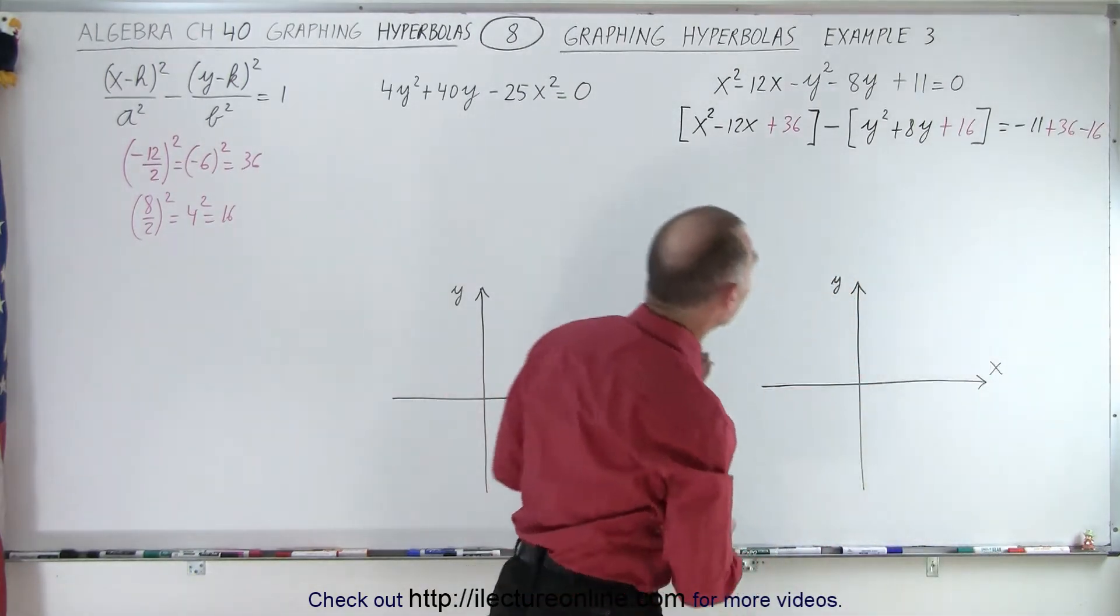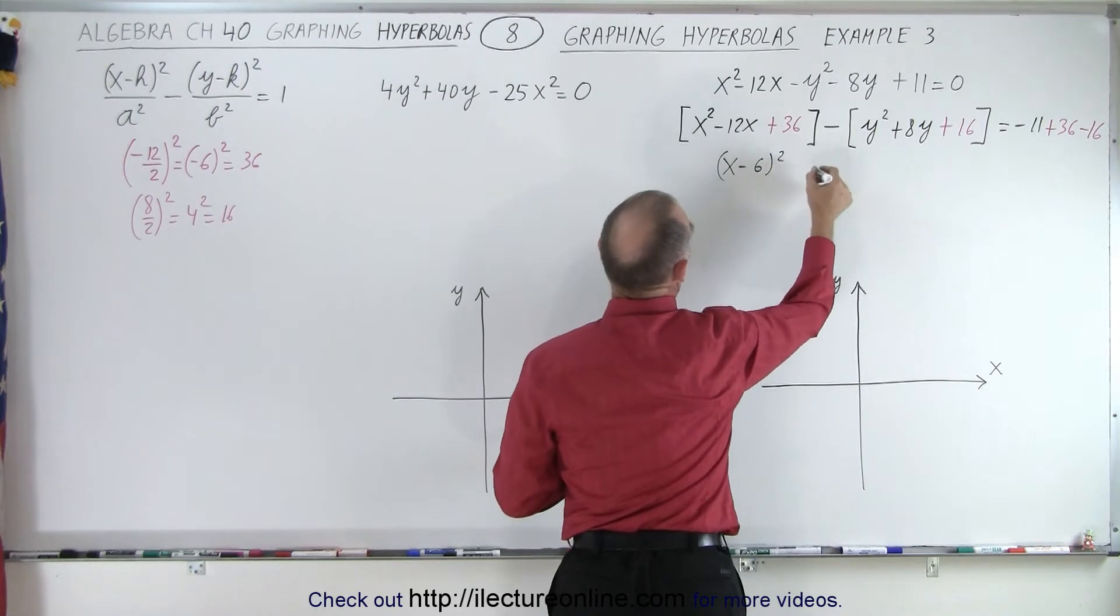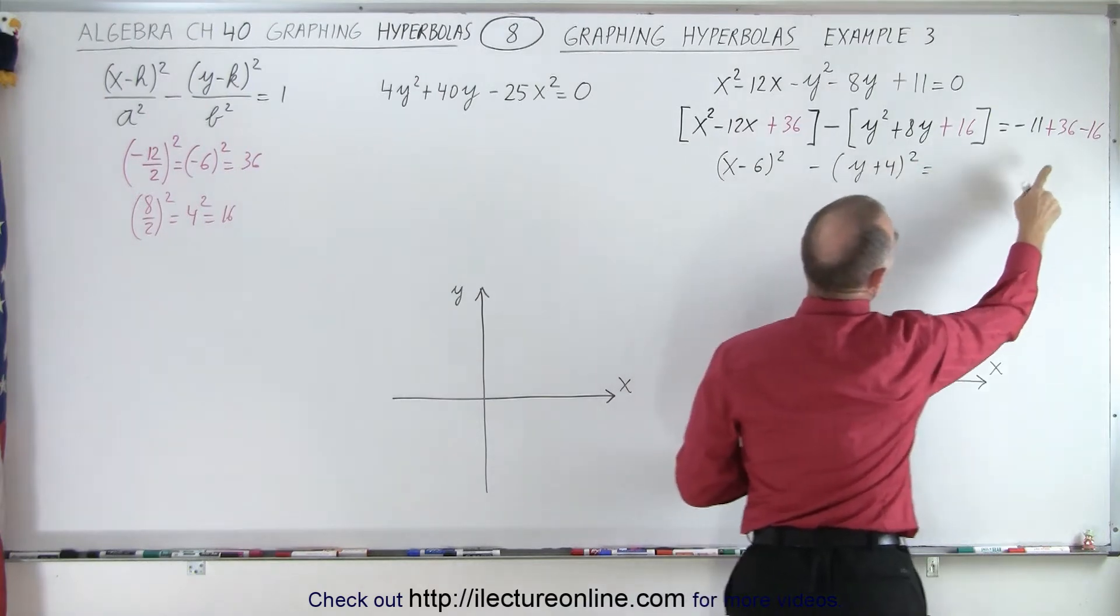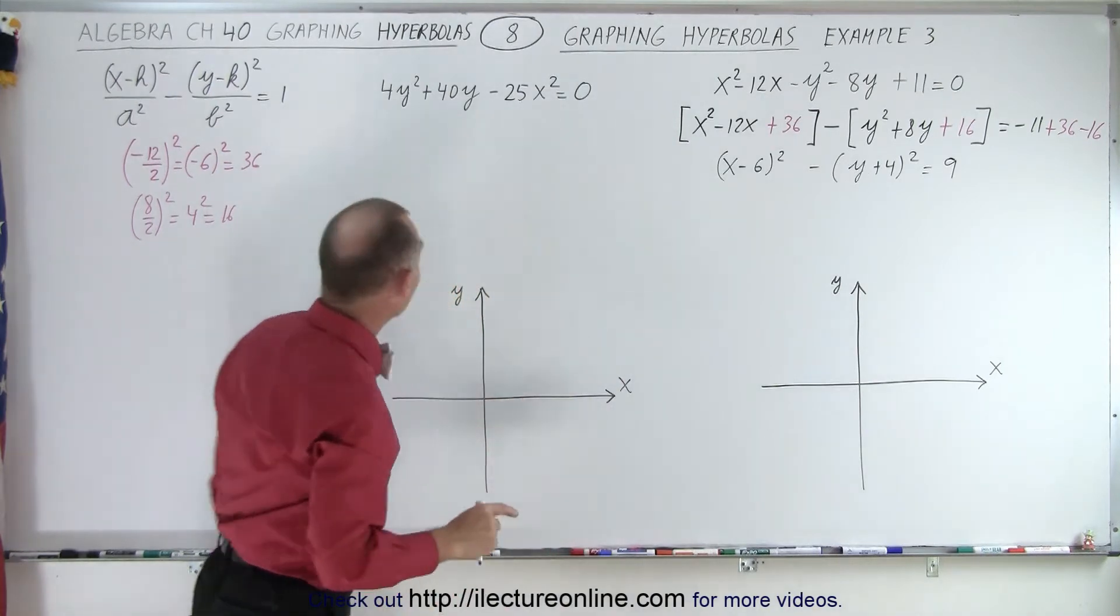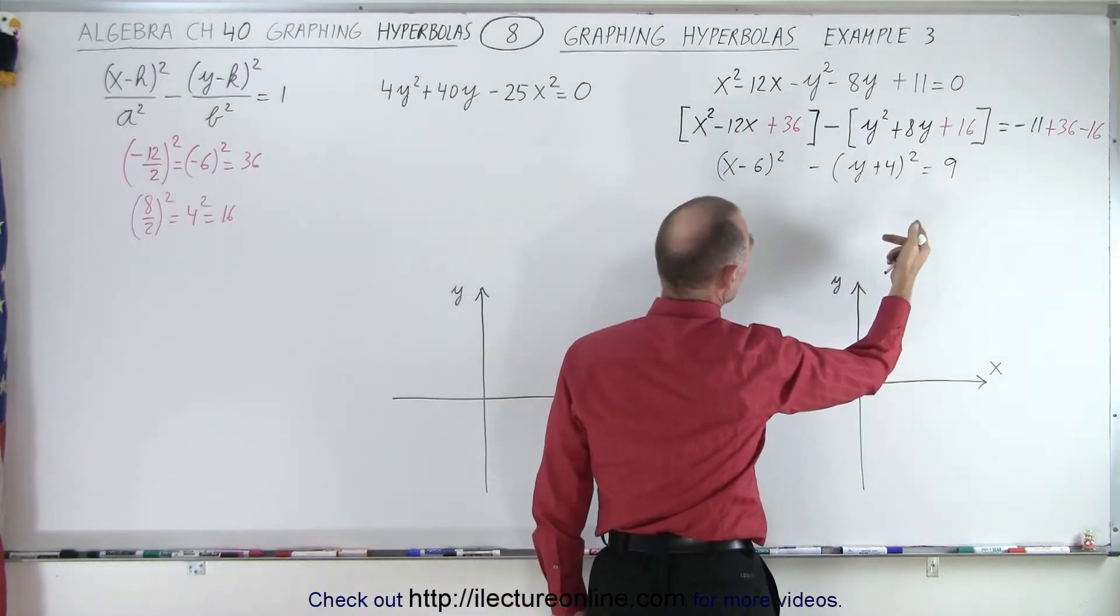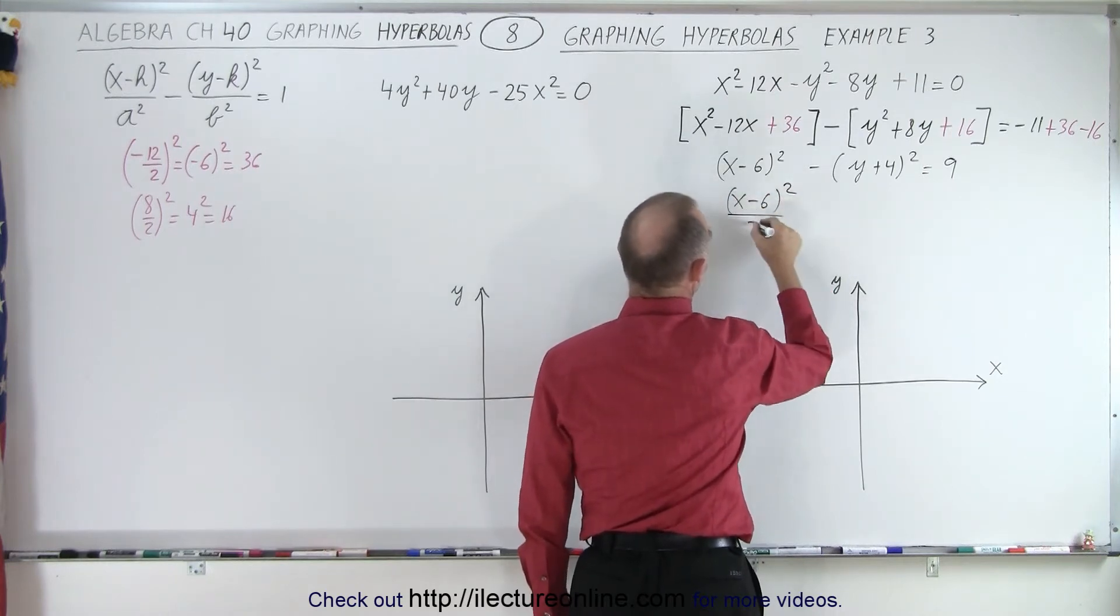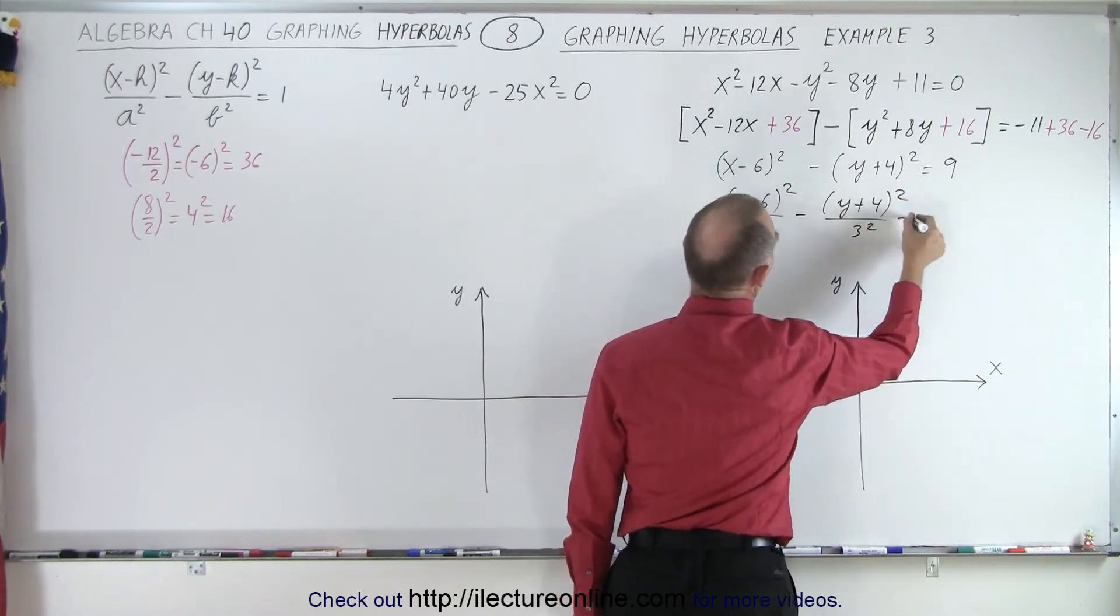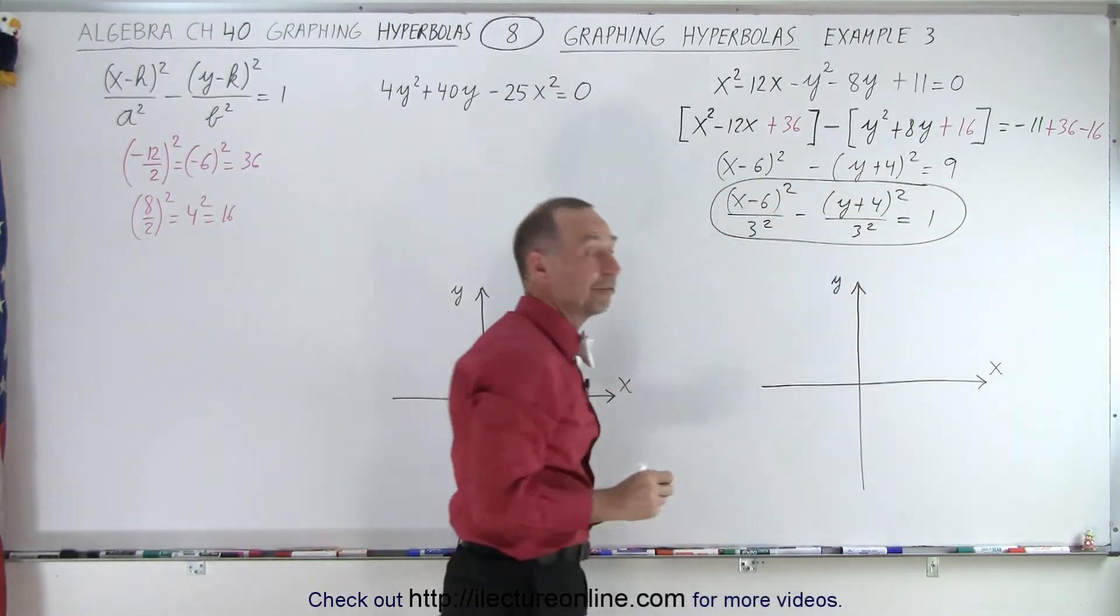Now we can go ahead and write it as a binomial squared. So in this case this becomes x minus 6 quantity squared minus y plus 4 quantity squared is equal to 20. That would be a positive 9. So in our form, we need a 1 there, so we divide both sides by 9. Or 9 is the same as 3 squared. So we can write this as x minus 6 squared divided by 3 squared minus y plus 4 squared divided by 3 squared is equal to 1. And now we have the equation in a format that makes it a lot easier to graph.